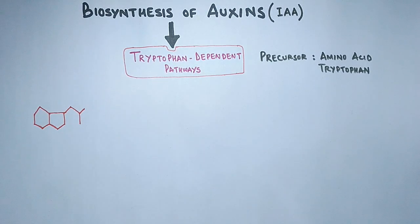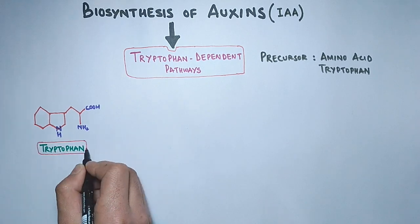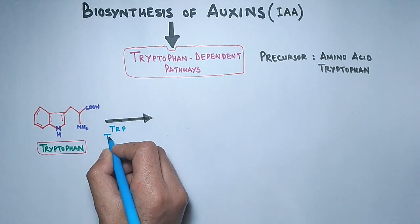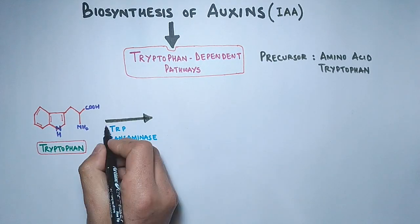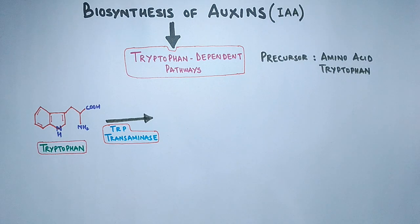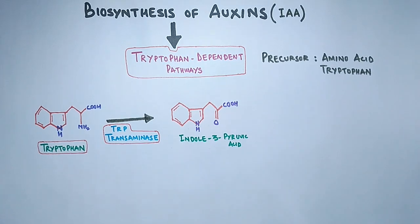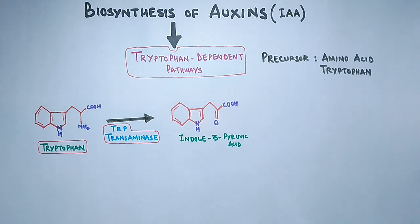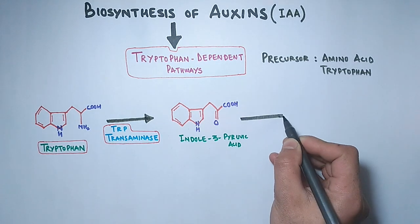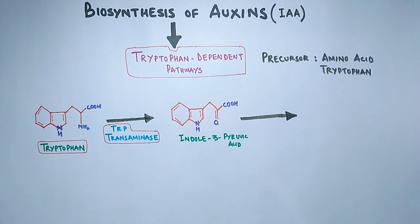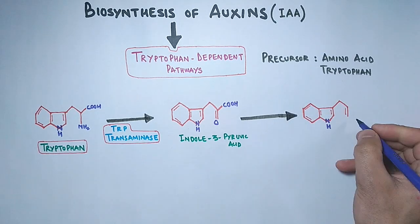In the tryptophan-dependent pathway, the tryptophan molecule is first acted upon by the enzyme tryptophan transaminase, or TRP transaminase, which converts it into indole-3 pyruvic acid. In this reaction, the amination of tryptophan takes place.